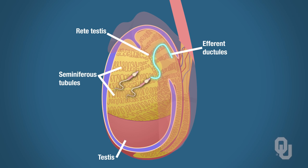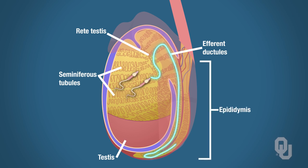From the efferent ductules, the sperm enter the epididymis and will ultimately make their way to the vas deferens. That is the pathway the sperm take to get out of the testes. What propels the sperm through all those structures? Peristalsis.